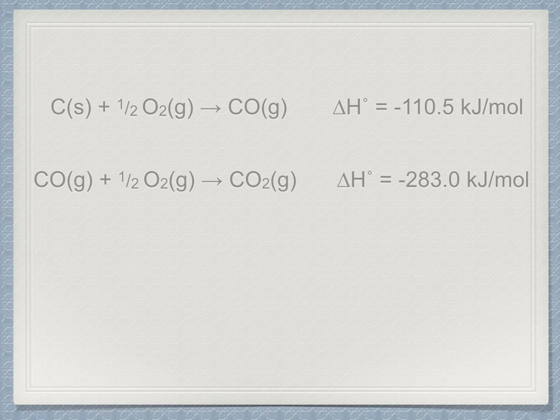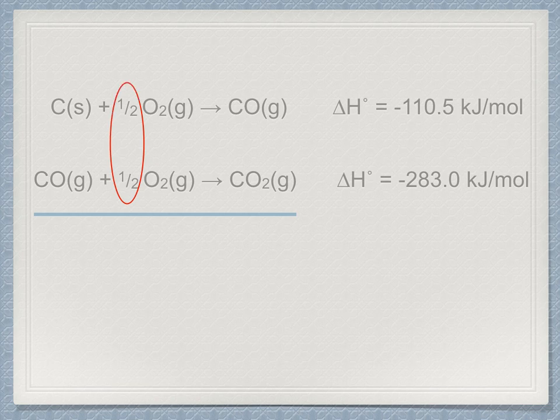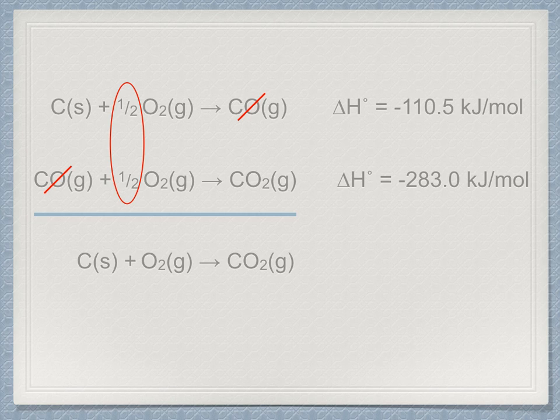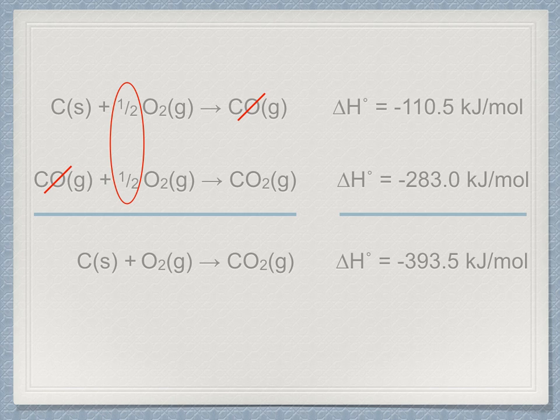Hess's law will have us write down the two equations and add them together, treating each component like it was a mathematical entity. Because of this, the two oxygen portions add together while the two CO portions cancel each other out, being on opposite sides of the equation. The resulting reaction equation describes exactly what we're looking for: the combination of oxygen and carbon to form carbon dioxide. Because we added the equations to each other, we also add the enthalpy together.